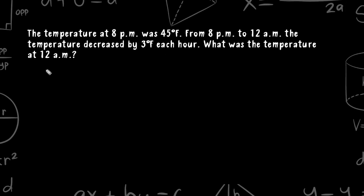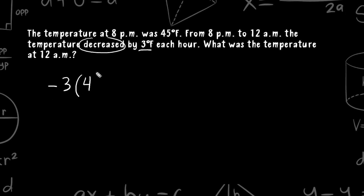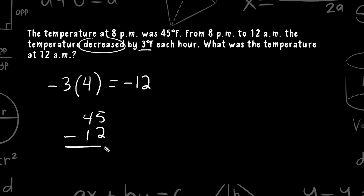I'm going to provide two different strategies for solving this problem. The first strategy: the temperature is decreasing by 3 degrees each hour, so we write that as the integer negative 3. From 8 p.m. to 12 a.m. is a span of 4 hours, so we multiply the hourly change by 4. In that 4-hour time span, the temperature decreased 12 degrees. The temperature started at 45 degrees, so we subtract 12, landing at 33 degrees Fahrenheit.